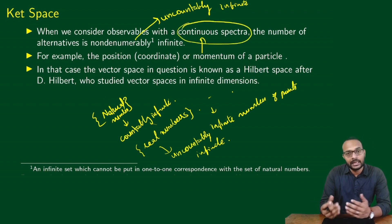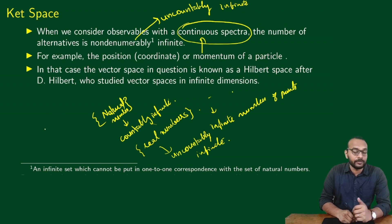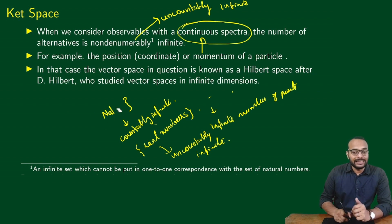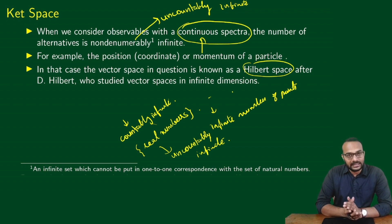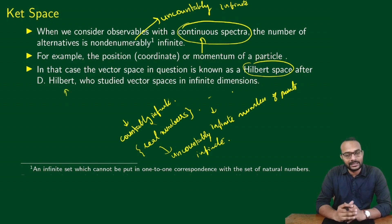The spectrum of measurement outcomes for position is actually continuous. If you can think of any real number, that could represent a particular point in space and be a possible measurement outcome. In this case, the vector space is known as Hilbert space, and it will have an infinite number of dimensions. Since the dimensionality is decided by the number of possible measurement outcomes, and for a continuous spectrum you have infinitely many, you will have an infinite-dimensional vector space — usually called the Hilbert space — developed by David Hilbert, who studied vector spaces in infinite dimensions.